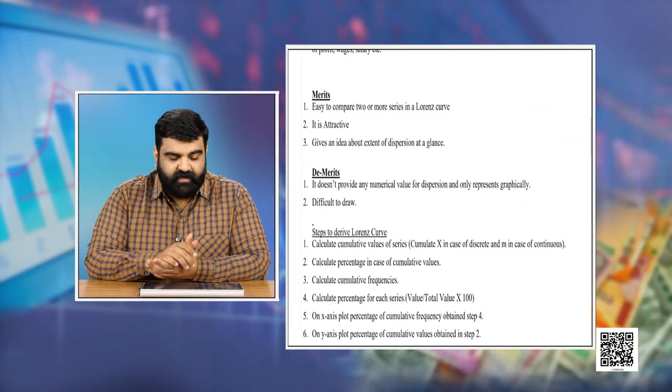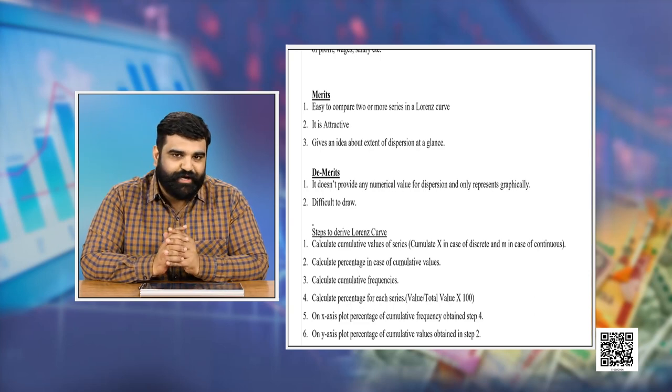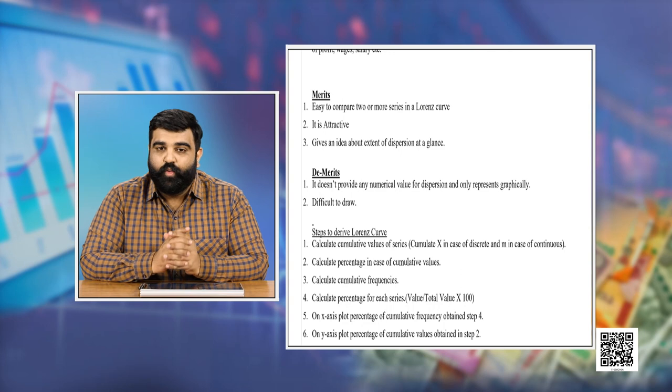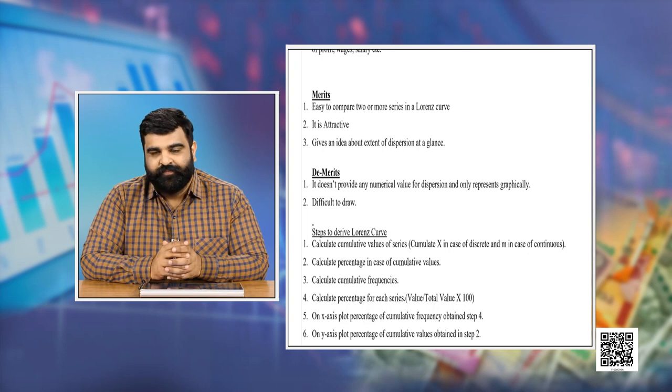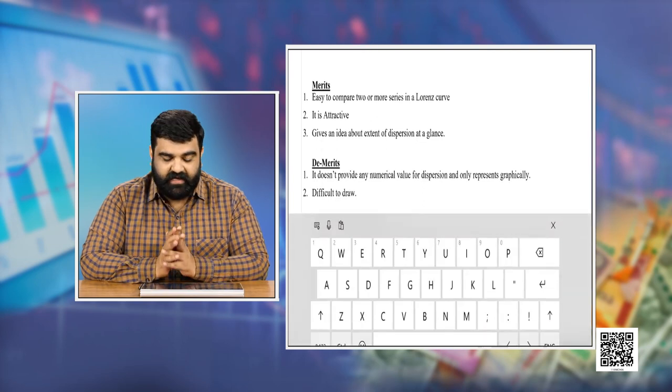The first merit is it is very easy to compare two or more series in the Lorentz curve — it depicts graphically how unequally or equally distributed two series are. The second merit is it is attractive: while range, quartile deviation, standard deviation, or mean deviation are all mathematical in nature, this is the only method which measures dispersion in the form of graphs, so it is more attractive than previous methods.